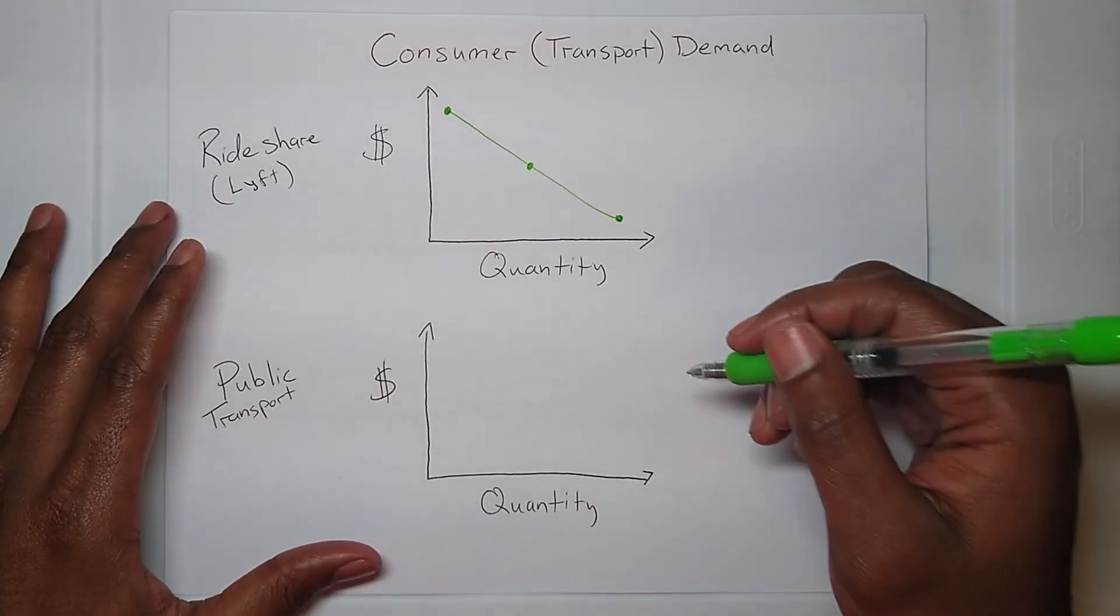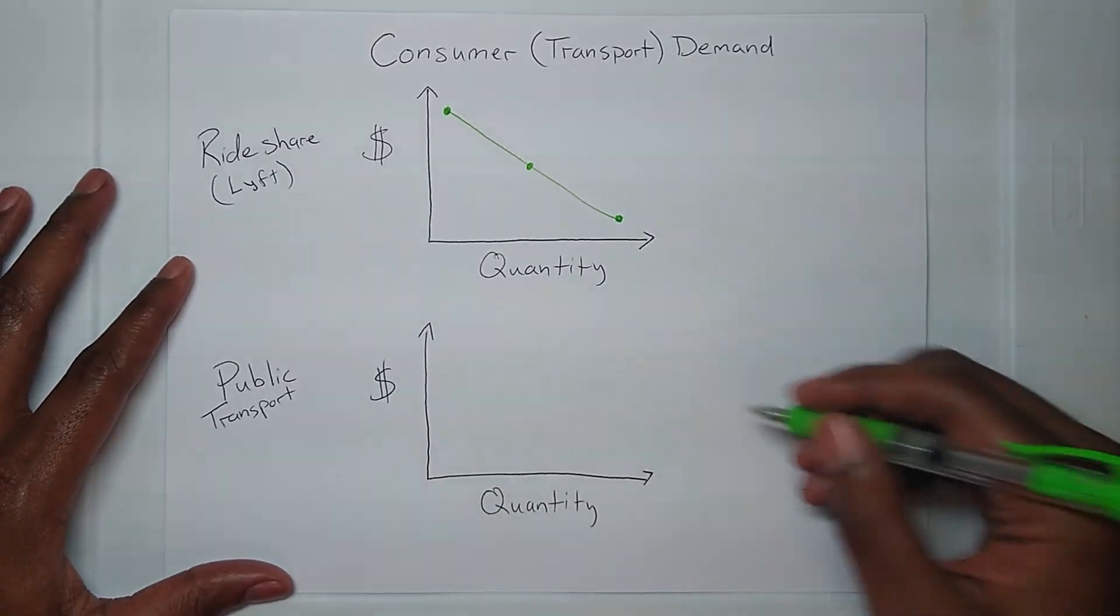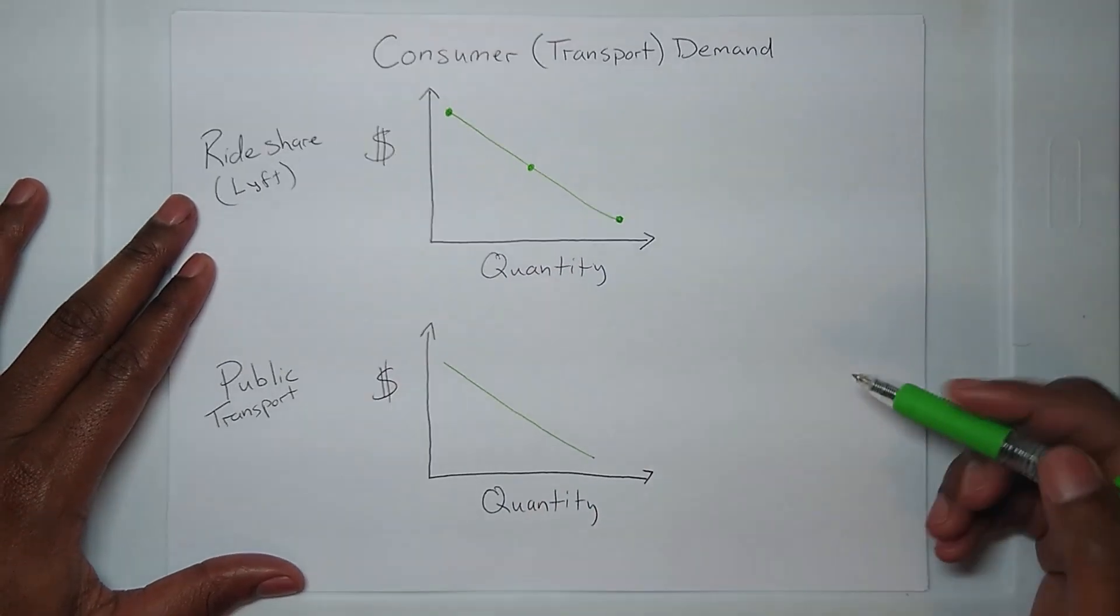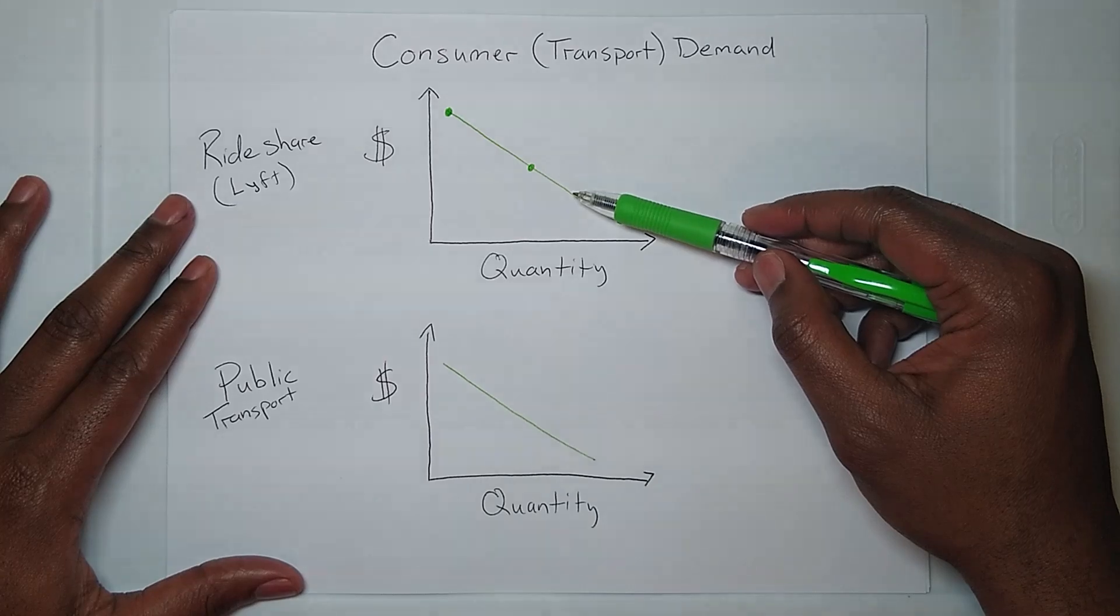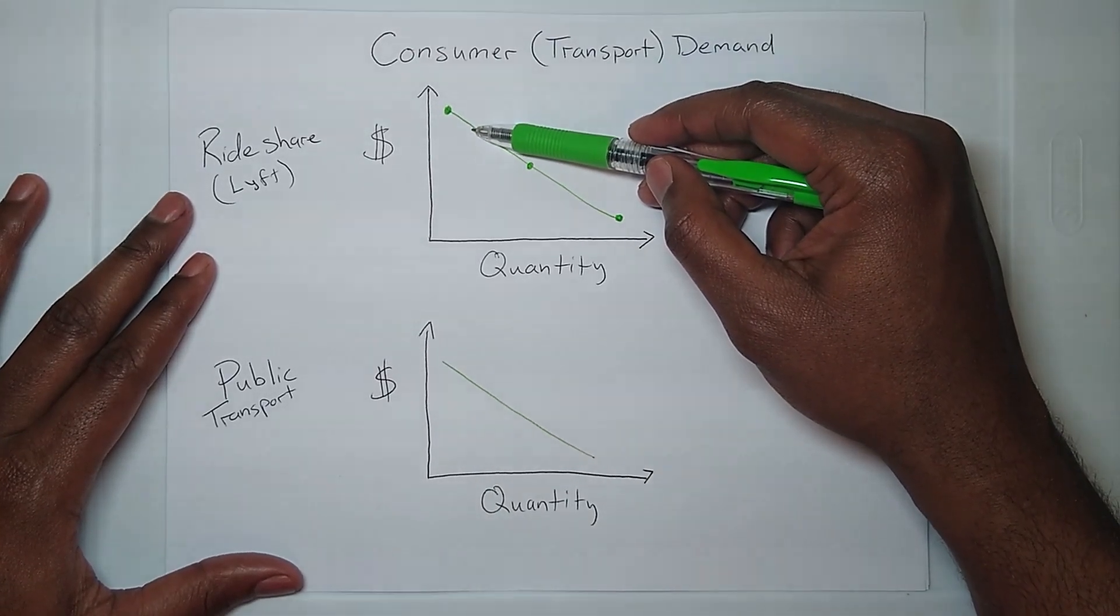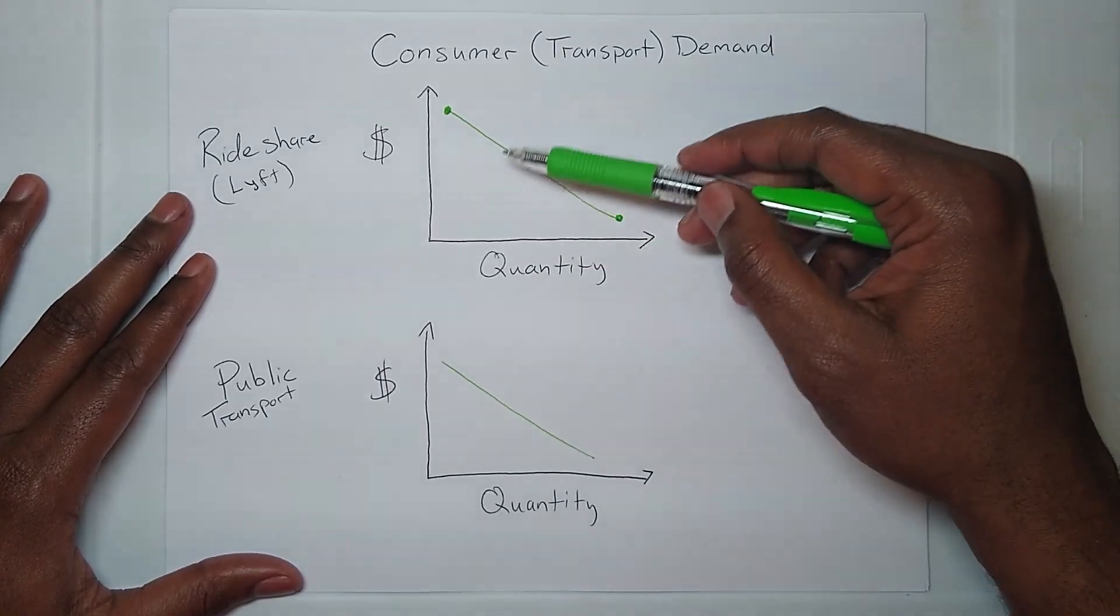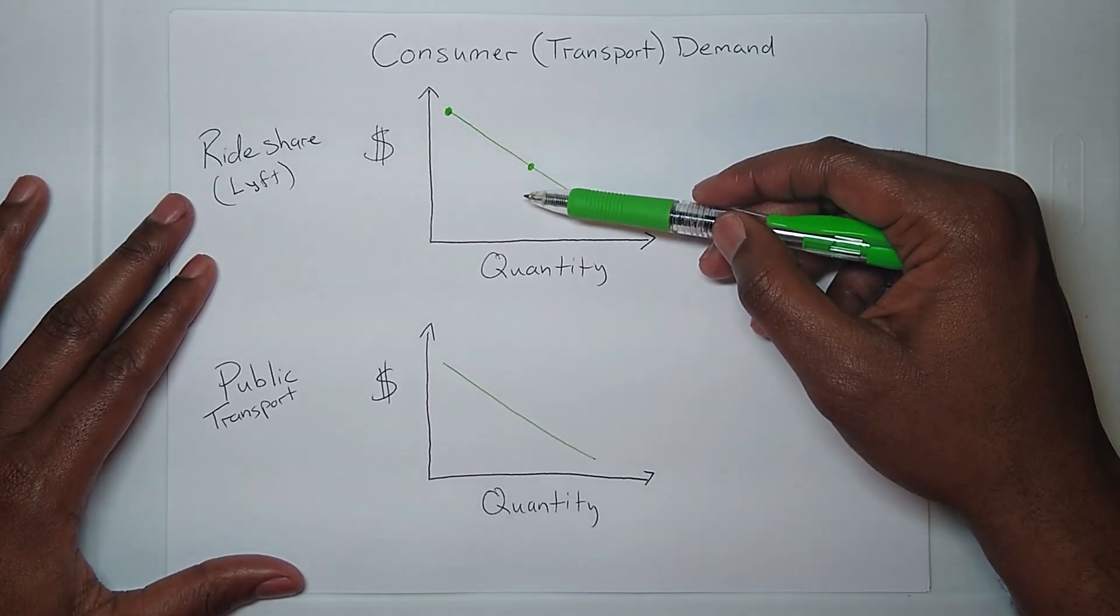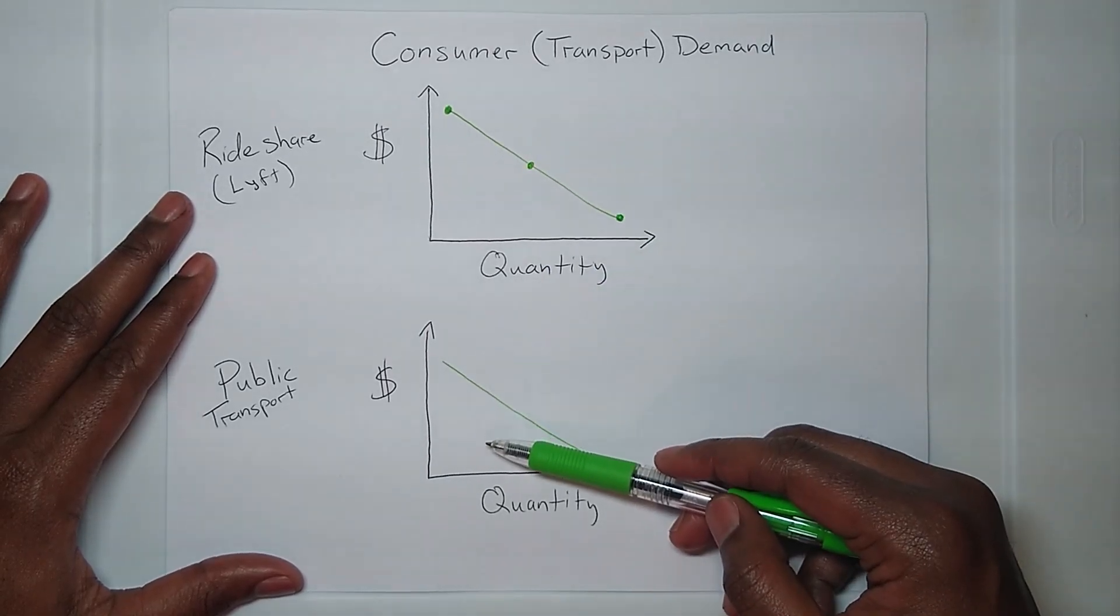The demand for one type of service can affect the demand for another. Say this public transportation service has its own demand curve. Now if this rideshare company were to increase its cost, the quantity demanded for that service would go down, which means people would have to find some alternative mode of transportation. In which case they may turn to public transportation.